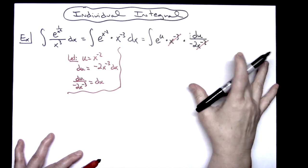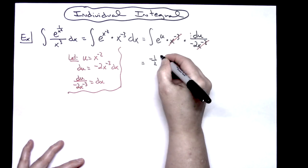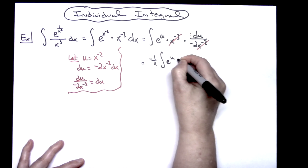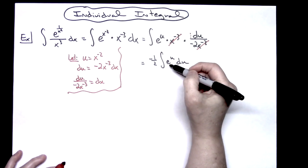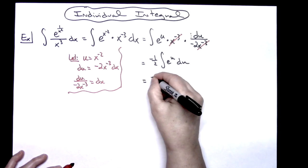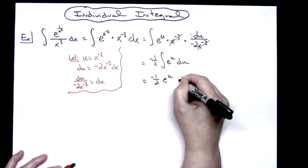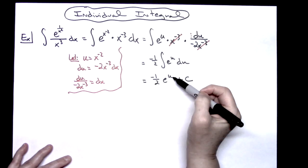There is a negative one half that I'm going to pull out in front, so negative one half integral e to the u du. Now at this point, hopefully you've got the integral of e to the u memorized. That's just going to be an e to the u, so I'll have a negative one half e to the u and then plus C because I have integrated at that point.